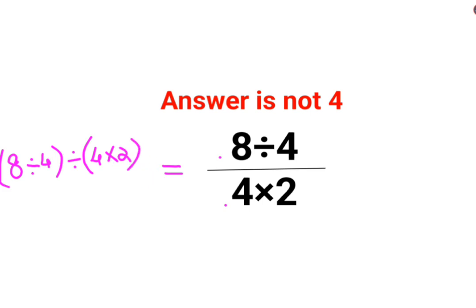So now according to this logic, we will have 8 divided by 4 which is 2, divided by 4 multiplied by 2 which is 8. So here this comes out to be 2 upon 8. The answer for this question is supposed to be 1 upon 4.